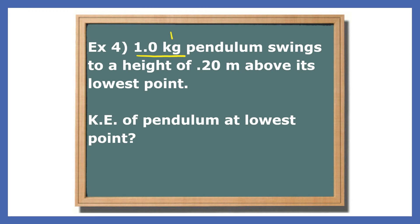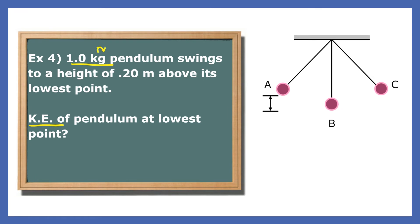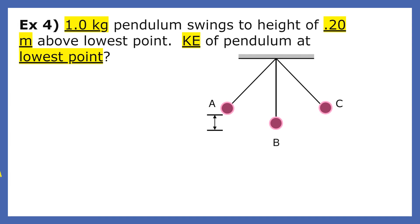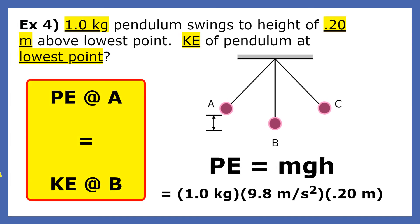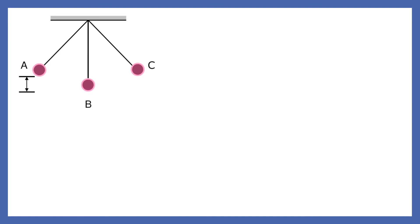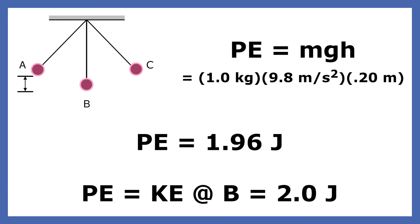A 1 kg pendulum swings to a height of 0.20 m above its lowest point. What's the kinetic energy of the pendulum at its lowest point? The kinetic energy at the lowest point equals the potential energy at the highest point. When we plug the mass of 1 kg at the height of 0.20 m into the equation PE = MGH, we get a potential energy of 1.96 joules. When we round the answer to two significant digits, we get 2.0 joules.